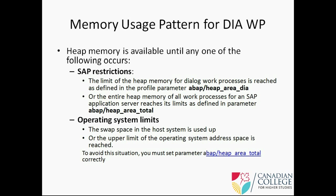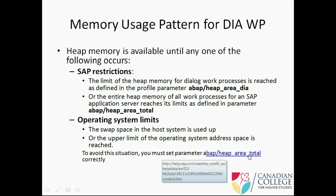Try to understand the concepts behind these parameters. For operating system limits: the swap space in the whole system is used up, or the upper limit of the OS address space is reached. To avoid this situation, you must set the parameter abap/heap_area_total correctly. During installation it is set to a certain value, and you have to change that value to suit your environment.